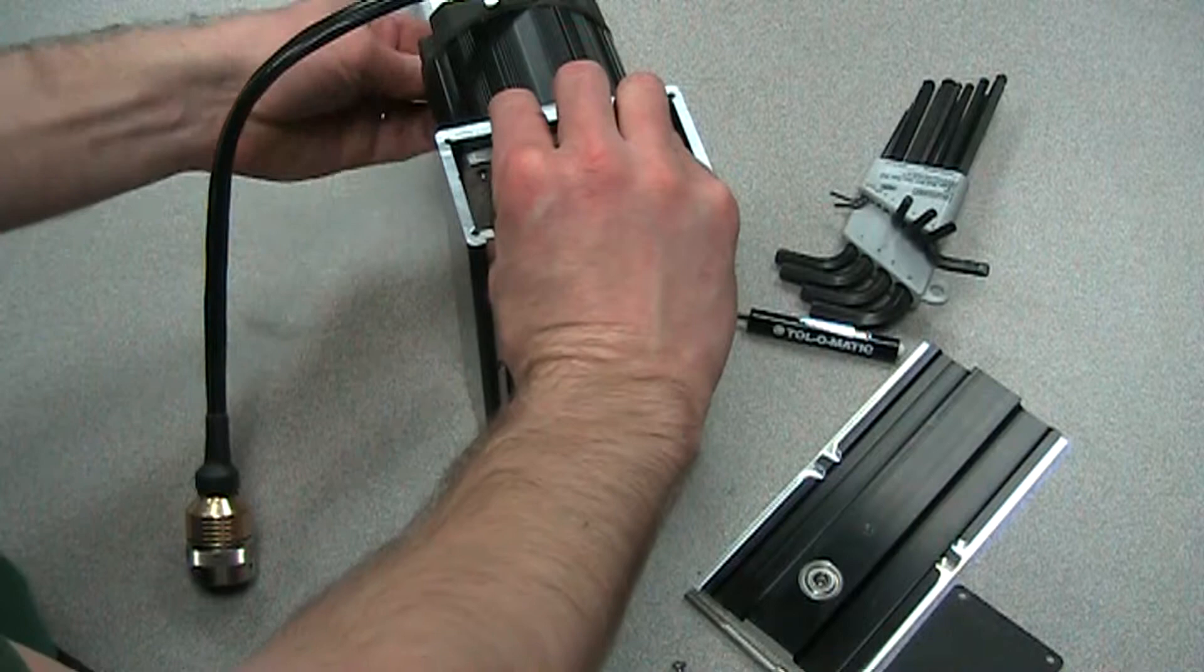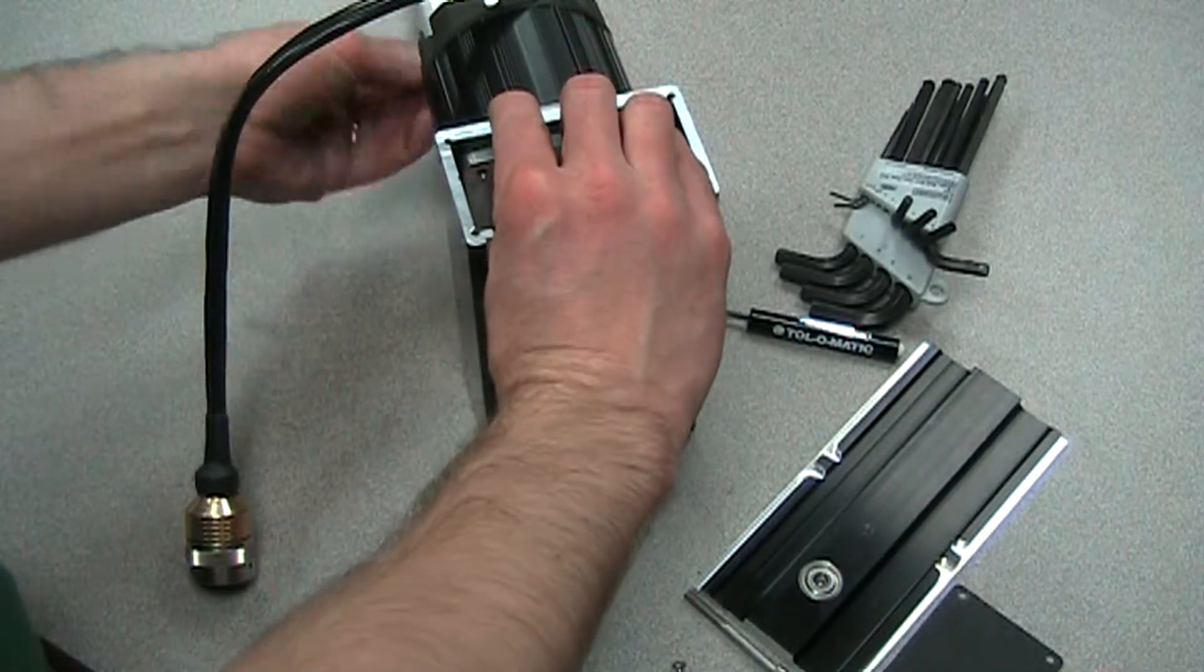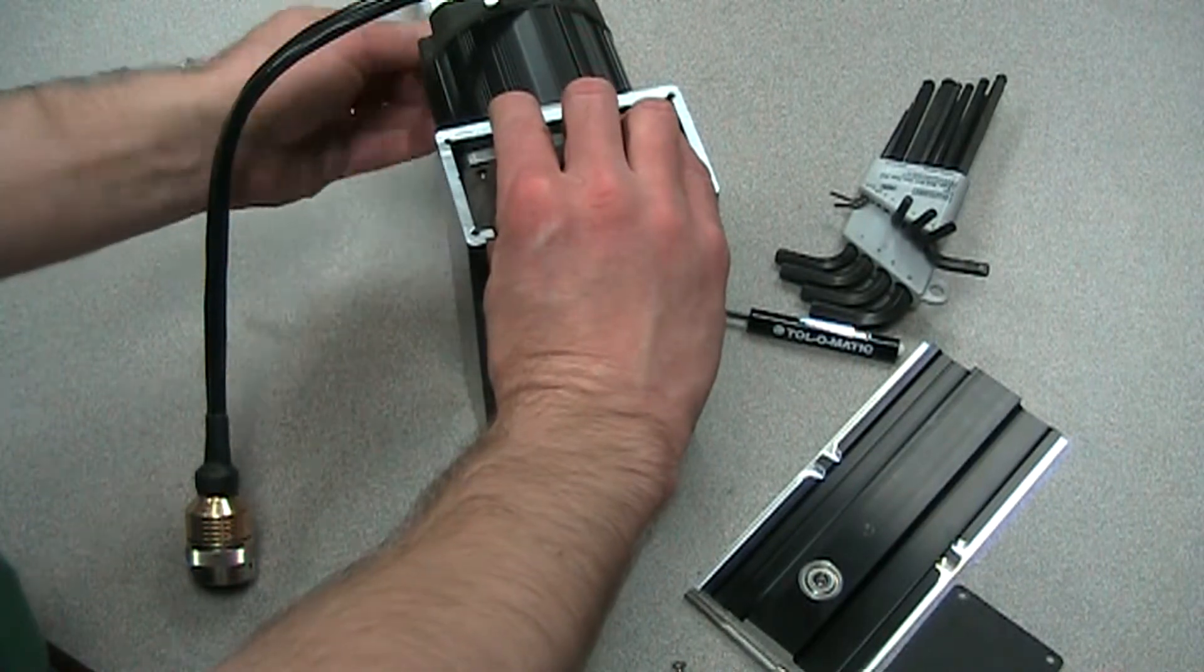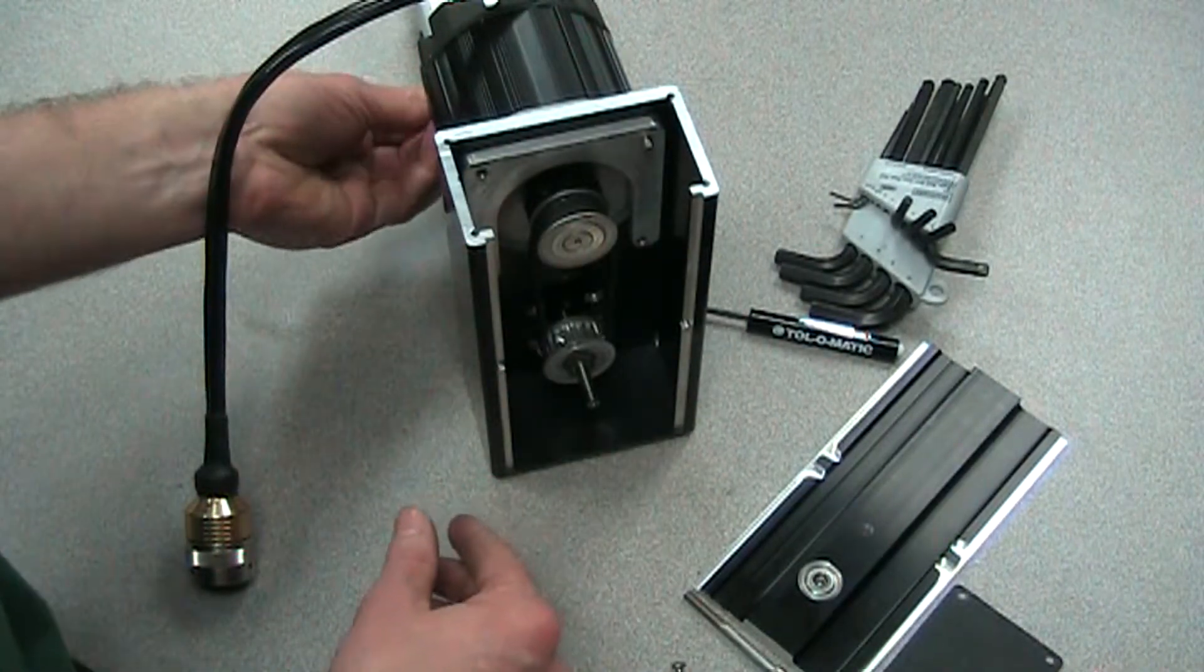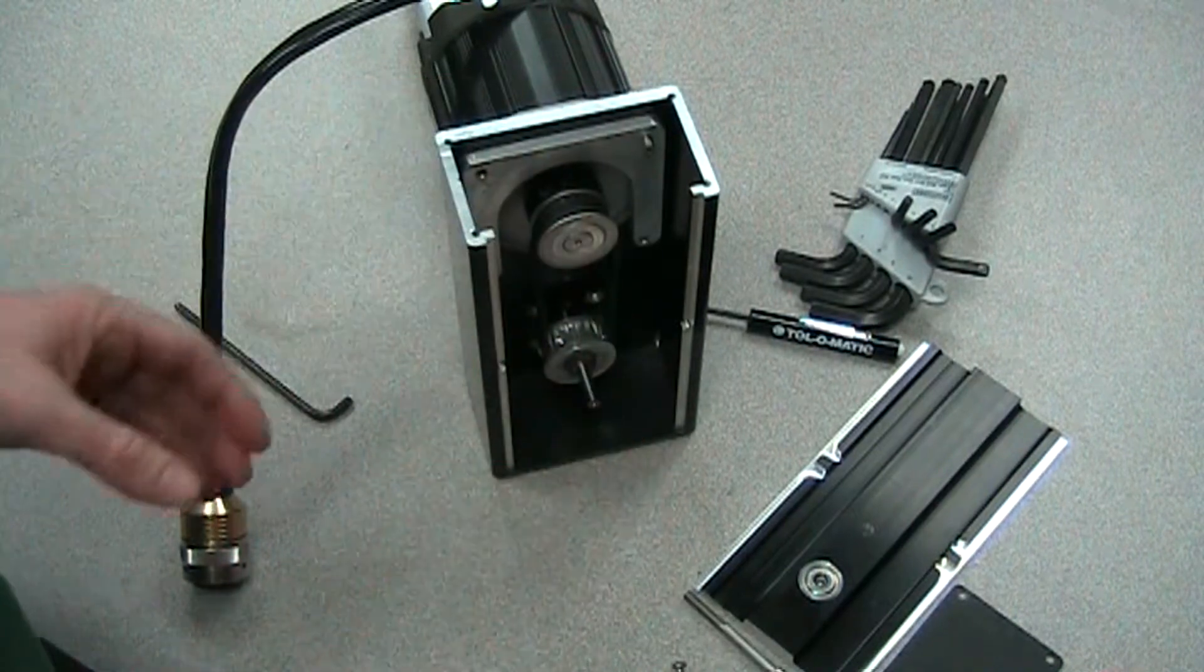And again, I just need to go snug on this because we're going to tension the belt. The belt needs to be tensioned to about 10 pounds of pull force. So first we get this screw tight, snugged up here. It needs to be in a position so that we can move it around pretty easily.